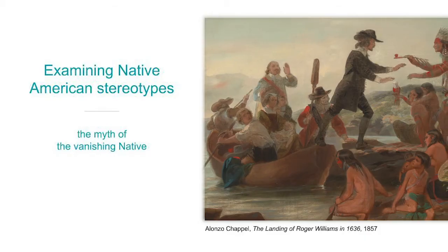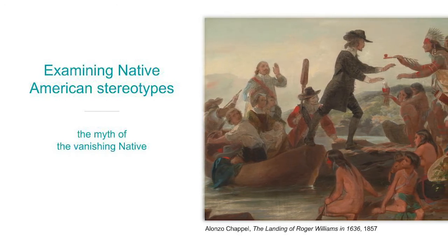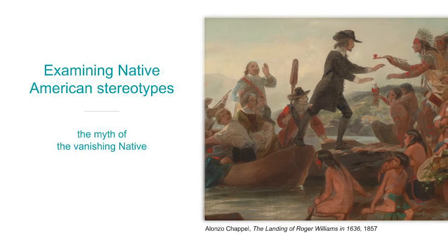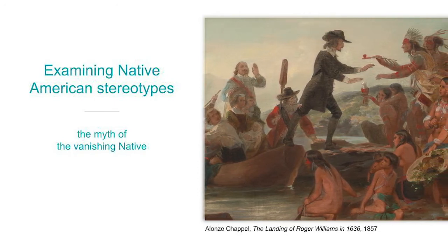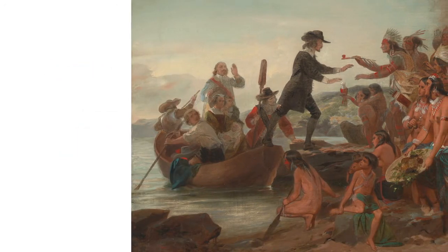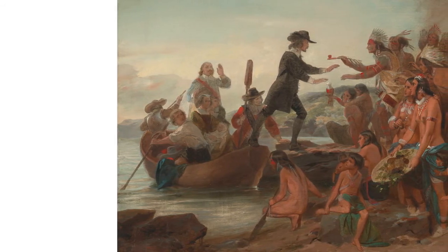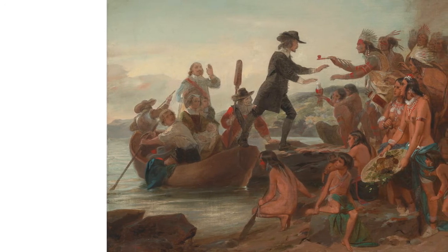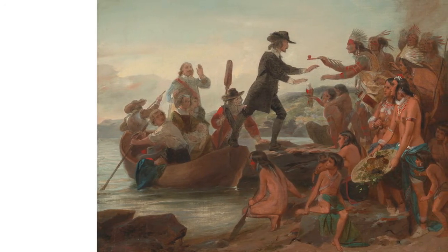Harmful stereotypes contribute to settler colonial violence against Indigenous communities in the United States. Here's another European American painting at the RISD Museum, which depicts a first encounter between Narragansett people and English settlers, including Roger Williams, founder of the colony of Rhode Island. This painting is often used in history books, even though it contains many stereotypes and inaccuracies. One of those is the myth of the vanishing native. Here's a quote from local Narragansett Niantic educator and director of the Tomaquag Museum, Loren Spears, speaking about the vanishing native myth in this painting.